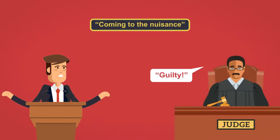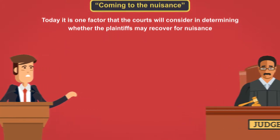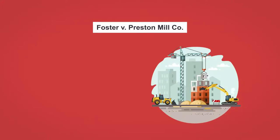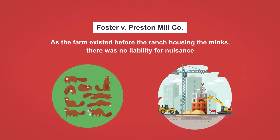While in the past coming to the nuisance was considered an absolute defense, today it is one factor that the courts will consider in determining whether the plaintiffs may recover for nuisance. An example of this manifested in Foster v. Preston Mill, where blasting from a nearby timber farm caused minks to panic and attack each other. As the farm existed before the ranch housing the minks, there was no liability for nuisance.